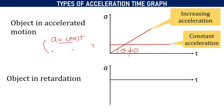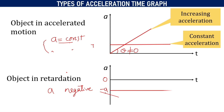Then we are going to consider the object in retardation, or when the acceleration is negative. In this case, we consider the graph in the fourth quadrant. For uniform retardation, we will get a straight line parallel to the time axis but in the fourth quadrant. Observe that whenever acceleration is a positive constant or a negative constant, we get a straight line.